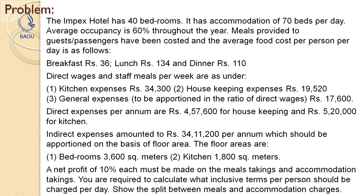The average occupancy is 60% throughout the year, meaning the occupancy ratio of the company is 60%. So 60% occupancy ratio, 40 bedrooms, and 70 beds per day — these three pieces of information will be used to calculate the total rooms and total occupancy of the hotel. Moving to the next part: meals provided. As already mentioned, the whole business is divided into two parts — one is the accommodation part and the second is the meals part. Accommodation information is already available.